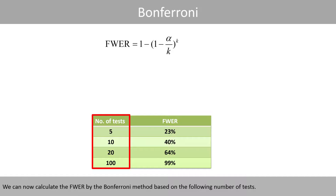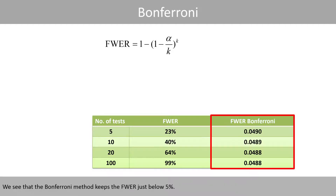We can now calculate the family-wise error rate by the Bonferroni method based on the following number of tests. We see that the Bonferroni method keeps the family-wise error rate just below 5%.